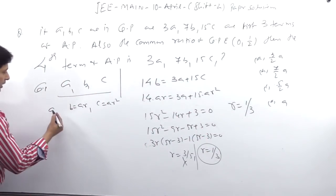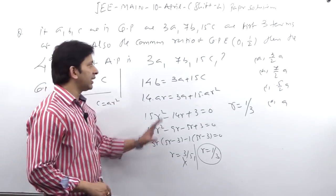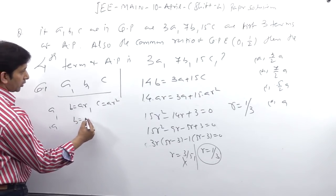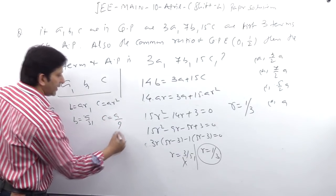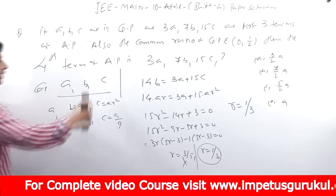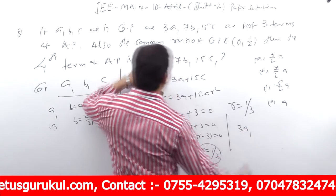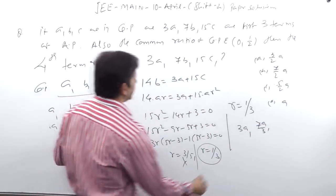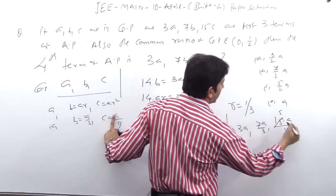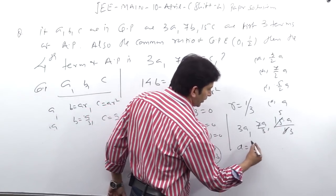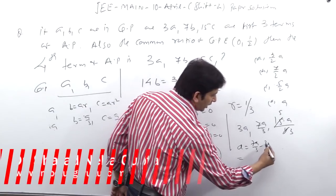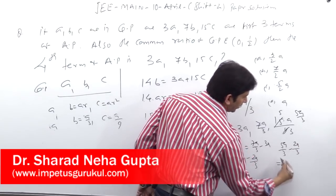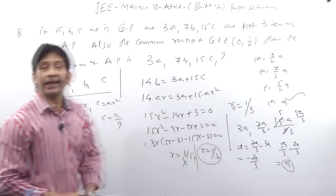With R = 1/3, we get B = A/3 and C = A/9. The three AP terms are: 3A, 7B = 7A/3, and 15C = 15A/9 = 5A/3. The common difference is 7A/3 - 3A = -2A/3. Adding to 5A/3 gives 5A/3 - 2A/3 = 3A/3 = A. So the fourth term of the AP is A.